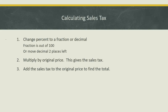These first two steps should be a review. Start by changing our percent to either a fraction or a decimal. If you want to make it into a fraction, you put it over 100. Or if you want to change it to a decimal, you move the decimal left two places. You may need to add an extra zero. Then, you multiply that percent by the original price — that's going to give you your sales tax. If the question asks for the total cost, you're going to add the sales tax to the original price to find the total.